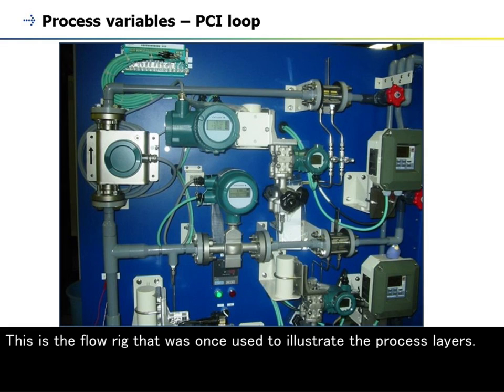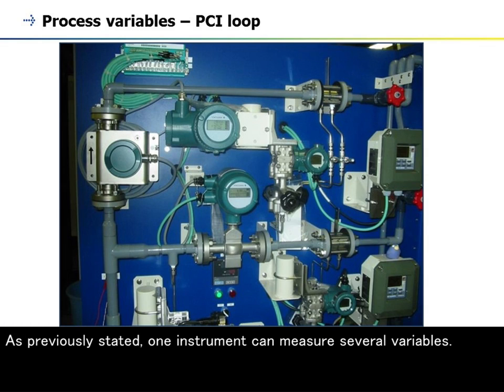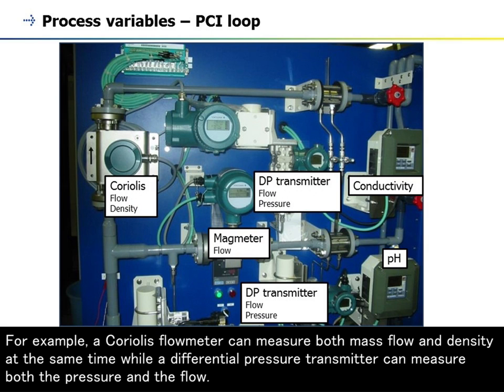This is the flow rig that was once used to illustrate the process layers. As previously stated, one instrument can measure several variables. For example, a Coriolis flow meter can measure both mass flow and density at the same time, while a differential pressure transmitter can measure both pressure and flow.